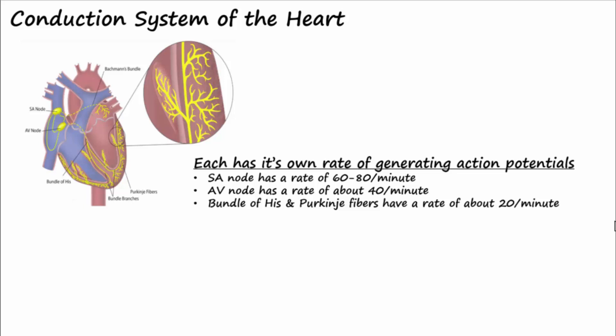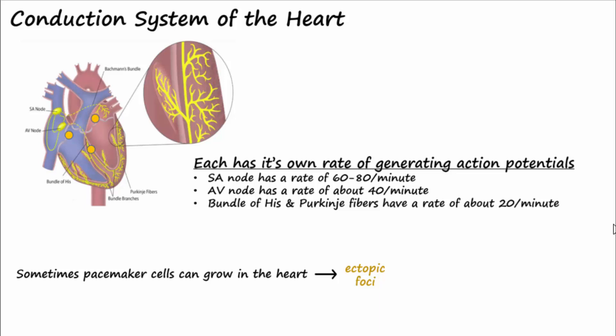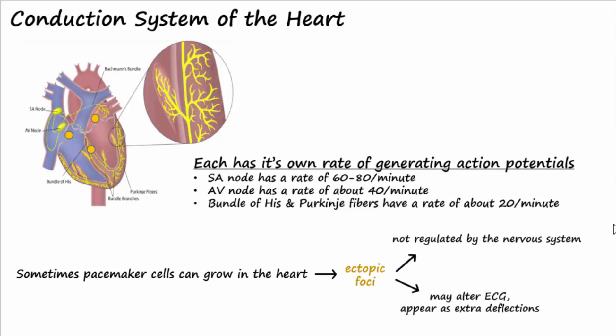Sometimes pacemaker cells can grow in the heart in places besides the nodes. When this happens, the location is called an ectopic focus and is usually not life threatening, but may over time disrupt normal conduction of the heart and cause it to be faster or slower than normal. In most cases, the faster rate of the SA node will mask the ectopic cells, but if the SA node becomes compromised, ectopic foci can begin to control the heart rate. This can be a very scary situation because ectopic foci are not regulated by the nervous system. Ectopic foci can also alter the electrocardiogram readings, appearing as extra deflections and causing misdiagnosis.